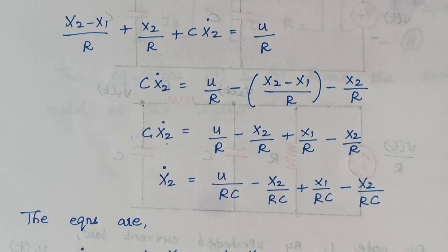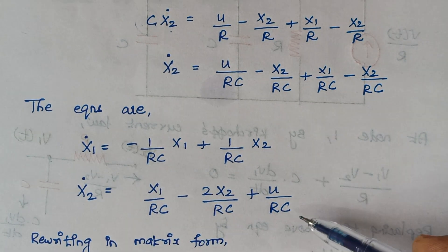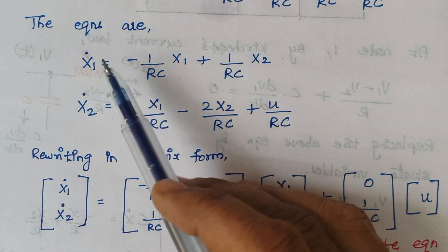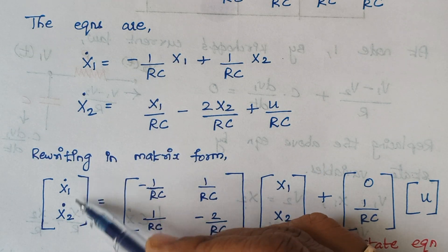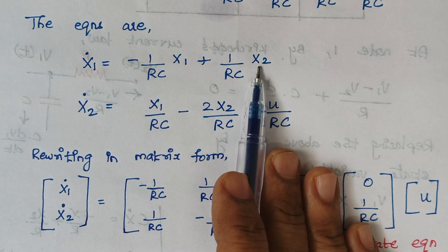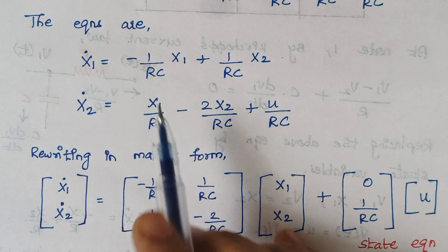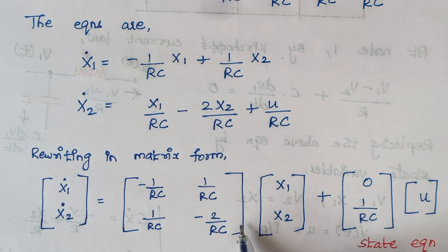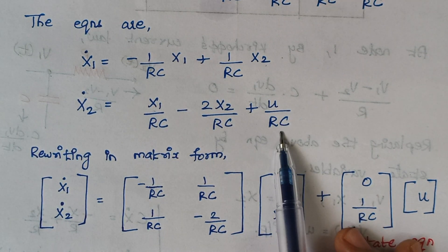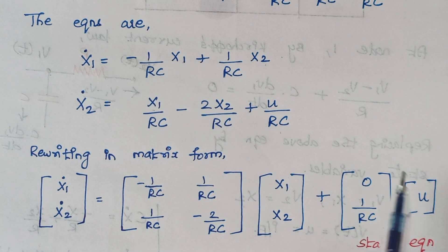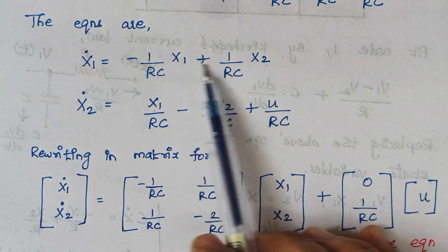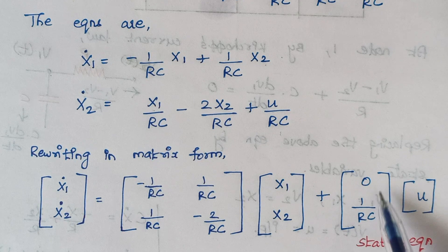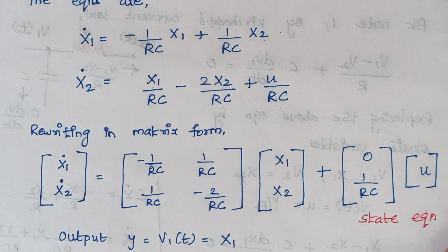We have now framed expressions for X1-dot and X2-dot. Rewriting in matrix form in the standard format: on the left-hand side [X1-dot; X2-dot] equals the A matrix times [X1; X2] plus the B matrix times U. The coefficient matrix contains the coefficients of X1 and X2 respectively. The input matrix is [0; 1/RC] since there is no U term in the first expression and U/RC appears in the second. This is the state equation.